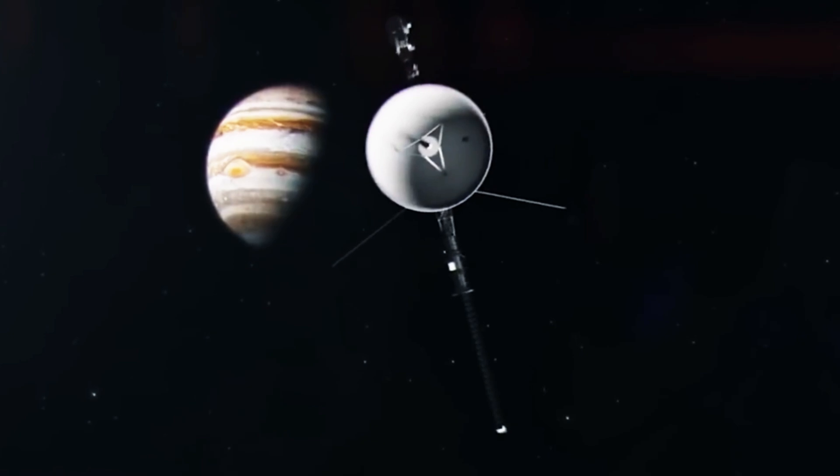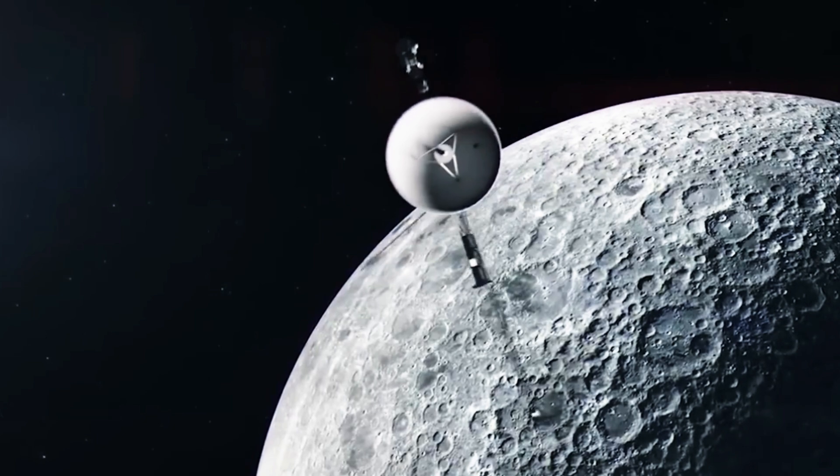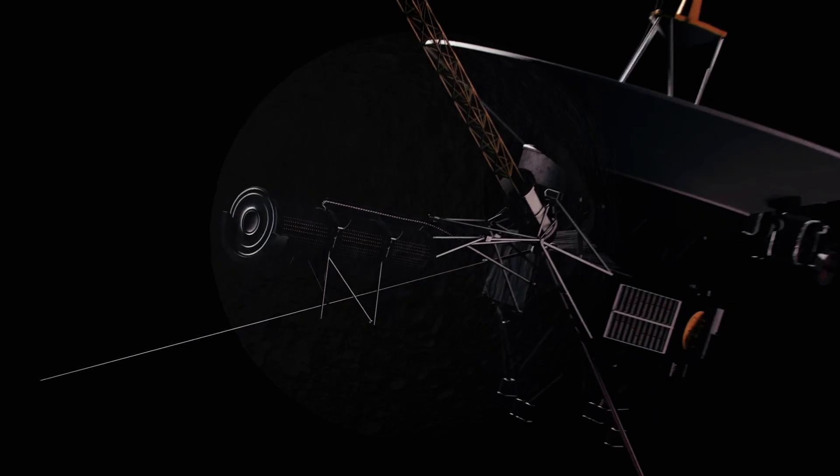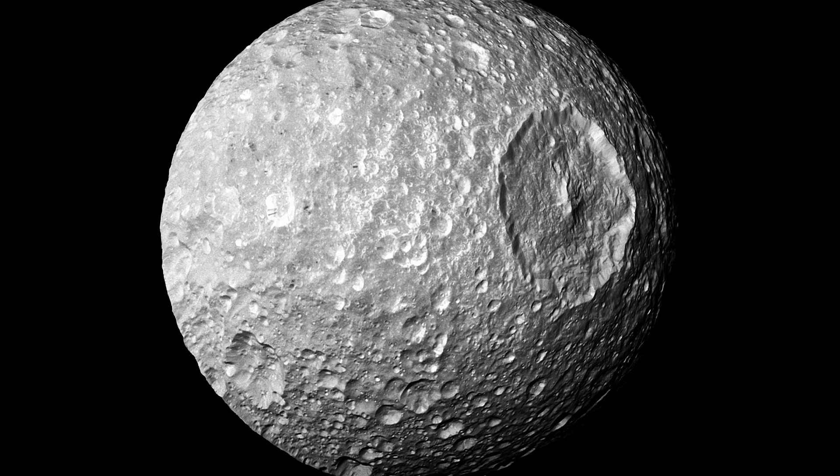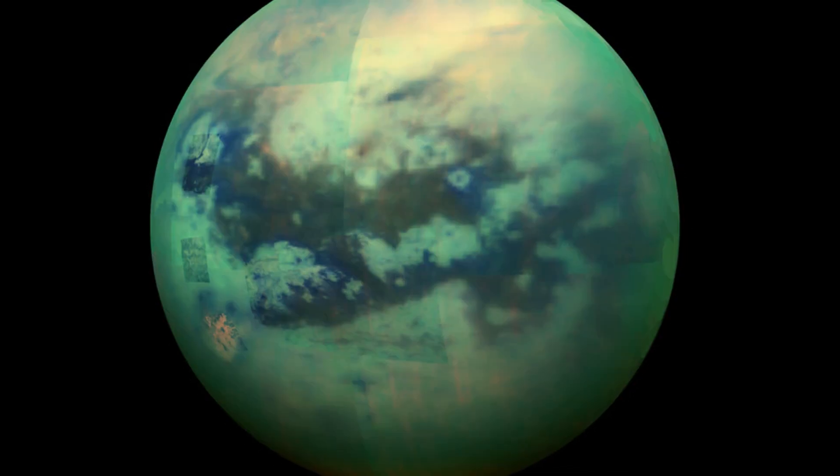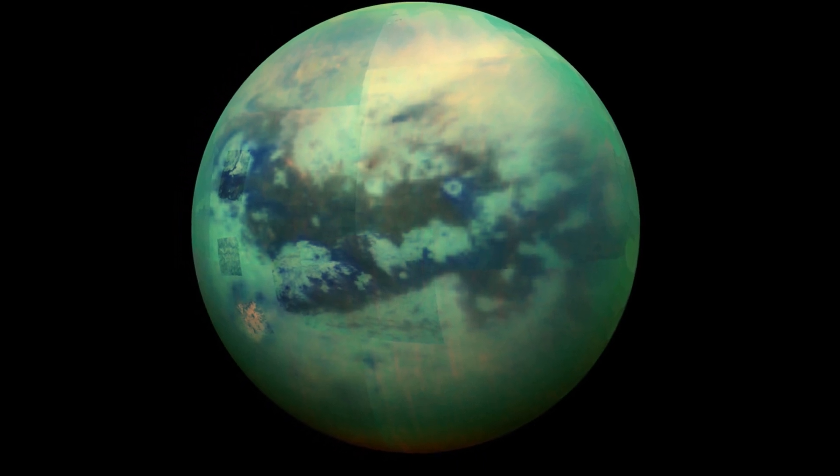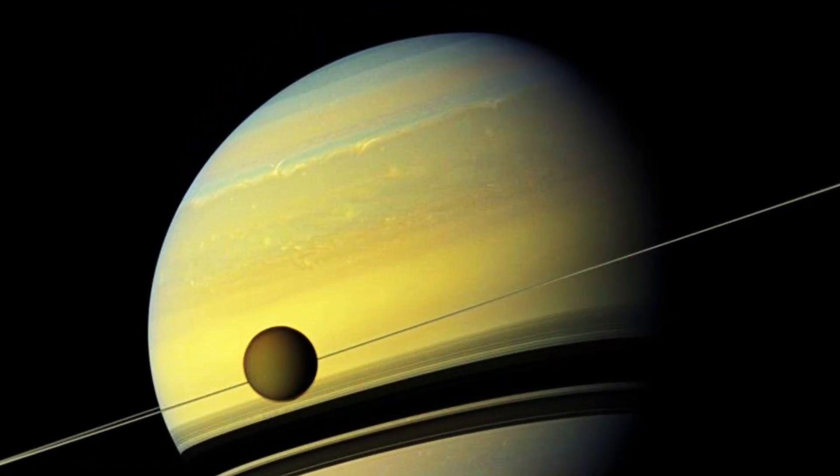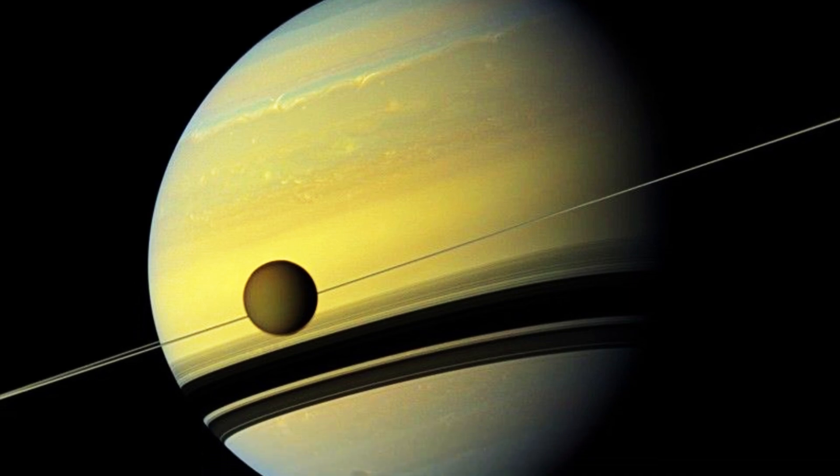Meanwhile, Voyager 2 pressed on toward Uranus and Neptune. The probe sent back breathtaking images of Saturn and its intricate ring system, which was revealed to consist of hundreds of tightly packed bands. They also discovered four new moons, including Mimas, which, with its massive Herschel crater, eerily resembled the Death Star from Star Wars. Titan, however, remained a mystery. Its thick atmosphere was impenetrable to visible light, but data suggested a temperature near the triple point of methane, a condition where methane could behave like water does on Earth.